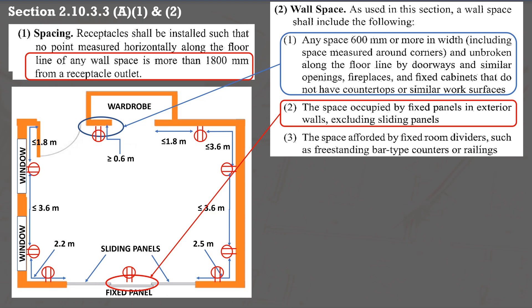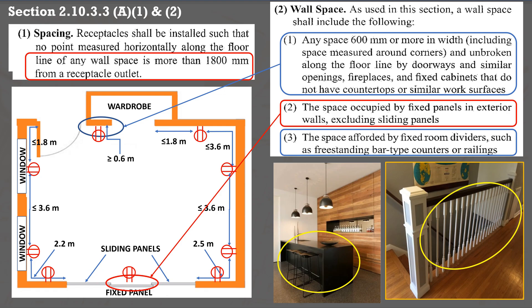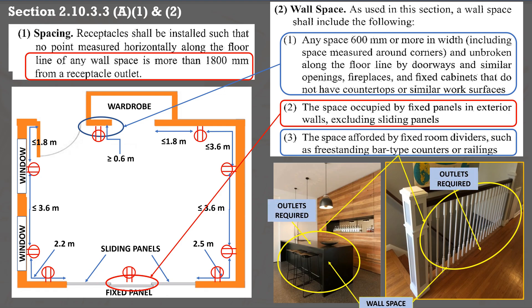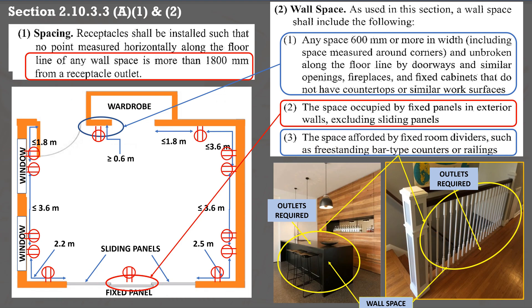Hence, an outlet is required for the space afforded by fixed room dividers, such as freestanding bar-type counters or railings. This divider and railing are considered wall space, so outlets are required. This layout complies with the minimum requirements of section 2.10.3.3 A1 and A2 of the PEC. You can have more outlets as needed, just ensure that no point on the wall is more than 1,800 mm from a doorway, wardrobe, or fireplace, and the maximum spacing between two outlets is not more than 3,600 mm.